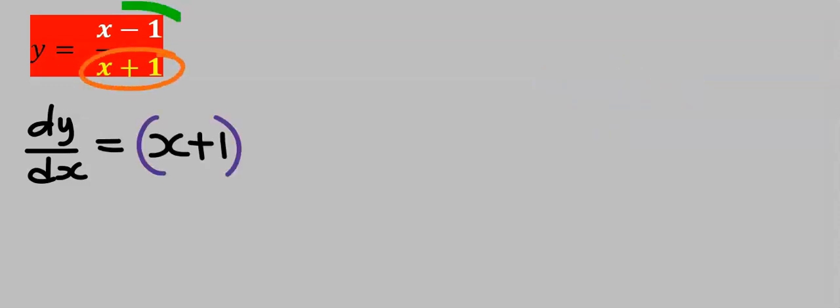Next, differentiate the numerator. If you differentiate X it is 1, if you differentiate 1 it is 0. However, I will leave the 0 out and leave only 1. Next, according to the quotient rule formula,